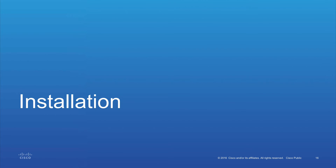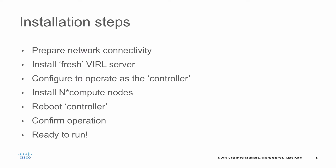Here is a summary of the installation steps. First, get network connectivity set up — for physical equipment, set up the appropriate LANs or VLANs; for ESXi, set up the appropriate vSwitch connectivity. Next, set up a fresh viral server as the controller — we do not recommend converting an existing viral server. Then install however many compute nodes you need, between one and four. Once the compute nodes are up, reboot the controller, which initializes everything, then confirm operation and you're ready to run simulations.